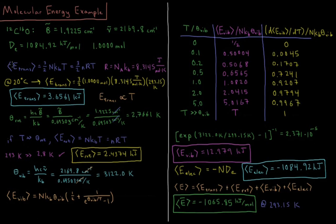Starting with translations, the energy of translation is 3/2 NKT, which is equal to 3/2 NRT, since N times the Boltzmann constant NK equals the number of moles times the gas constant NR. R equals Avogadro's number times Boltzmann's constant, which is 8.3145 joules per mole Kelvin. So at 20°C, which is 293.15 Kelvin, we have 3.5 × 1 mol × 8.3145 J/mol·K × 293.15 K, giving a translational energy of 3.6561 kilojoules per mole.